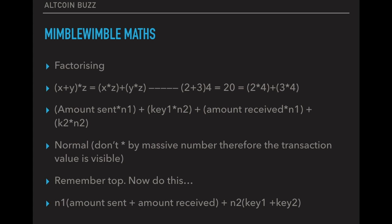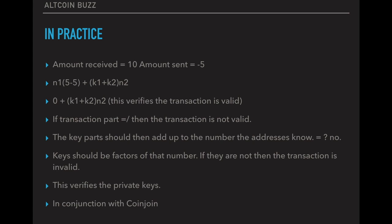This is pretty simple in the normal transaction. However, you don't times by this massive number. That's the big difference here. You don't times by N1 or N2. So you just get five amount sent and amount received. So five minus five, and that makes it so it's written and seen by everyone. So it's no longer private. So if you remember the top, now you do this. So it's N1, so the big number times by the amount sent plus the amount received added to the second big number for the keys times by key one plus key two. So what you should get if the amount received equals the amount sent. So if you look at the second bullet point there, you get N1, five minus five. So it's N1 times zero, which means that it's zero plus the keys times N2. And this verifies that the transaction is valid. So that verifies that the transactions as a whole valid mathematically speaking.